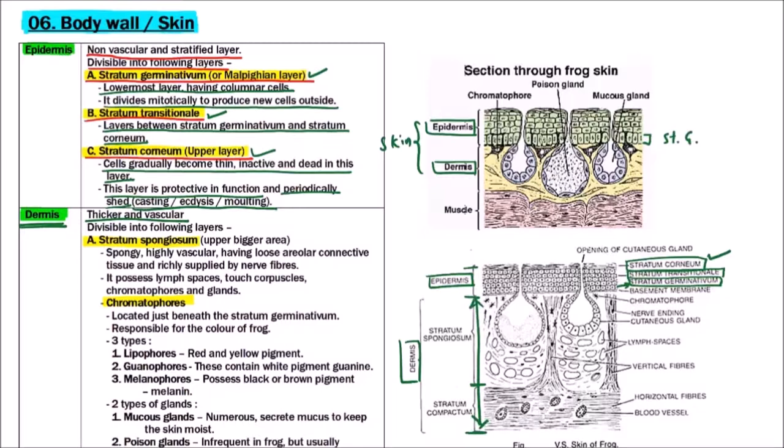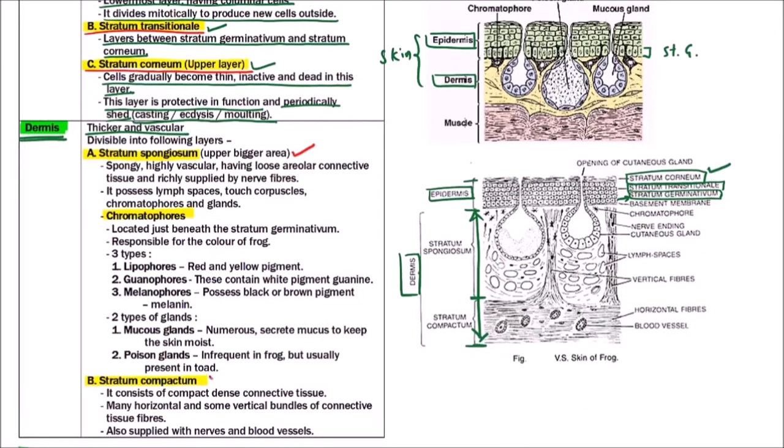Dermis is divisible into two layers: stratum spongiosum and stratum compactum. The layer is known as stratum spongiosum because it is having spongy, highly vascular, loose areolar connective tissue, and it is richly supplied by nerve fibers. It also possesses lymph spaces, touch corpuscles, chromatophores, and various glands. We can observe in the stratum spongiosum: here are the chromatophores, nerve endings, cutaneous glands, and various lymph spaces.